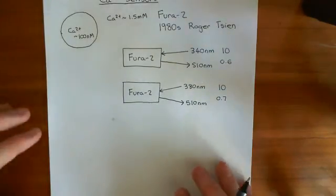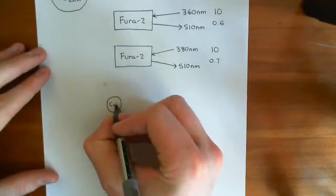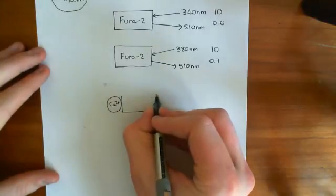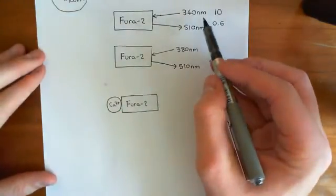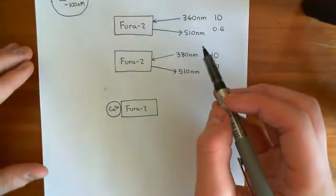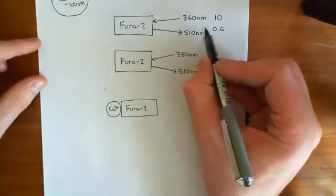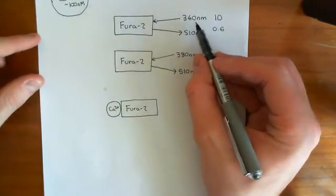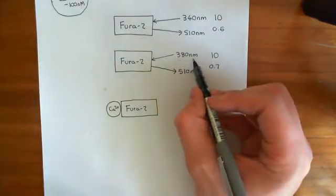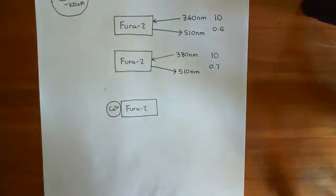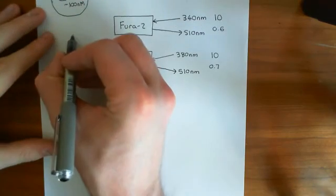Here comes the big idea: when calcium binds to Fura-2 — so if calcium goes up in the cytoplasm and calcium binds to Fura-2 — Fura-2's affinity for absorbing photons of these given wavelengths changes. So these numbers change. The ratio between how much radiation you get emitted when you stimulate Fura-2 with 340 nanometers versus 380 nanometers is going to change.